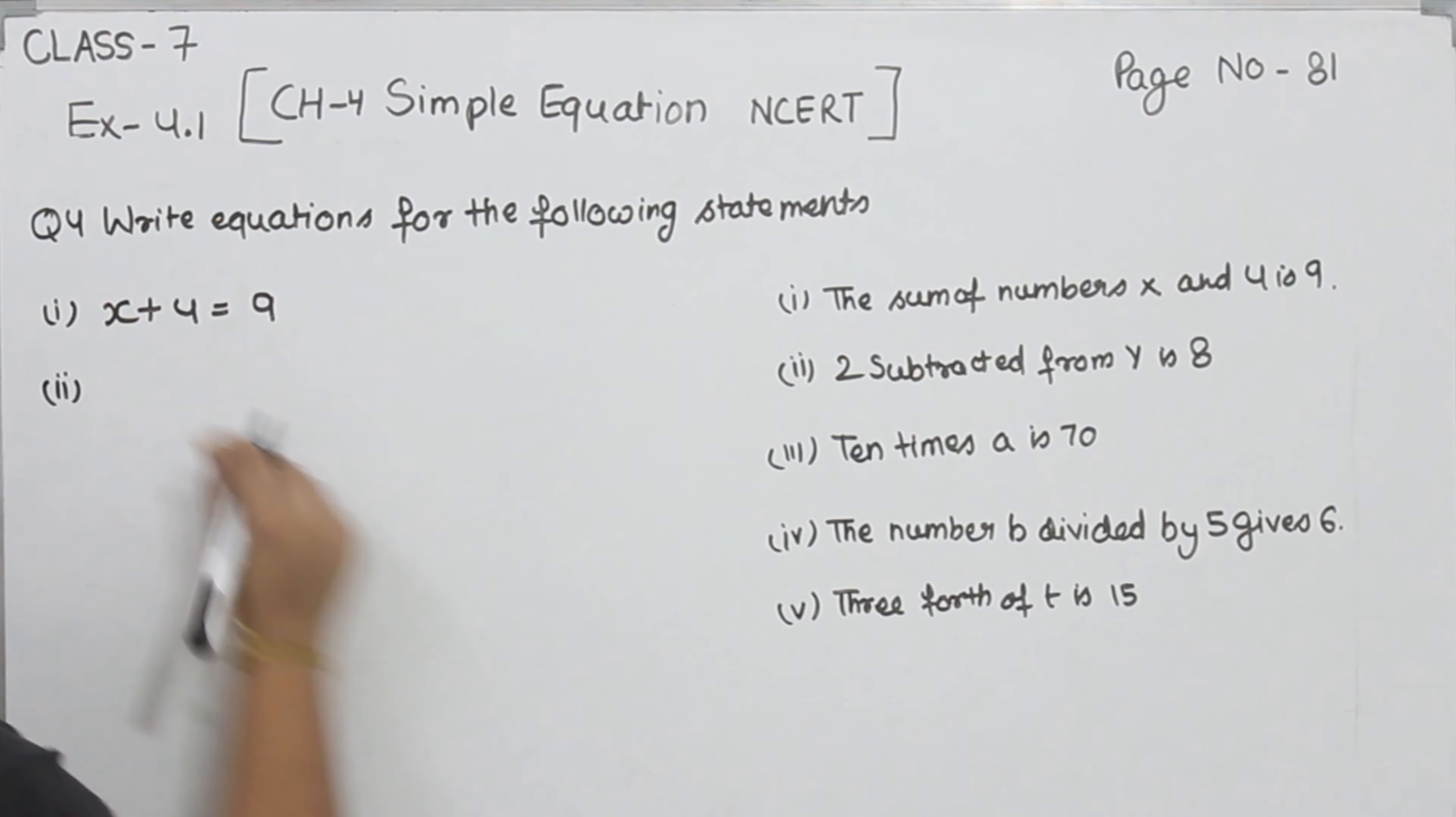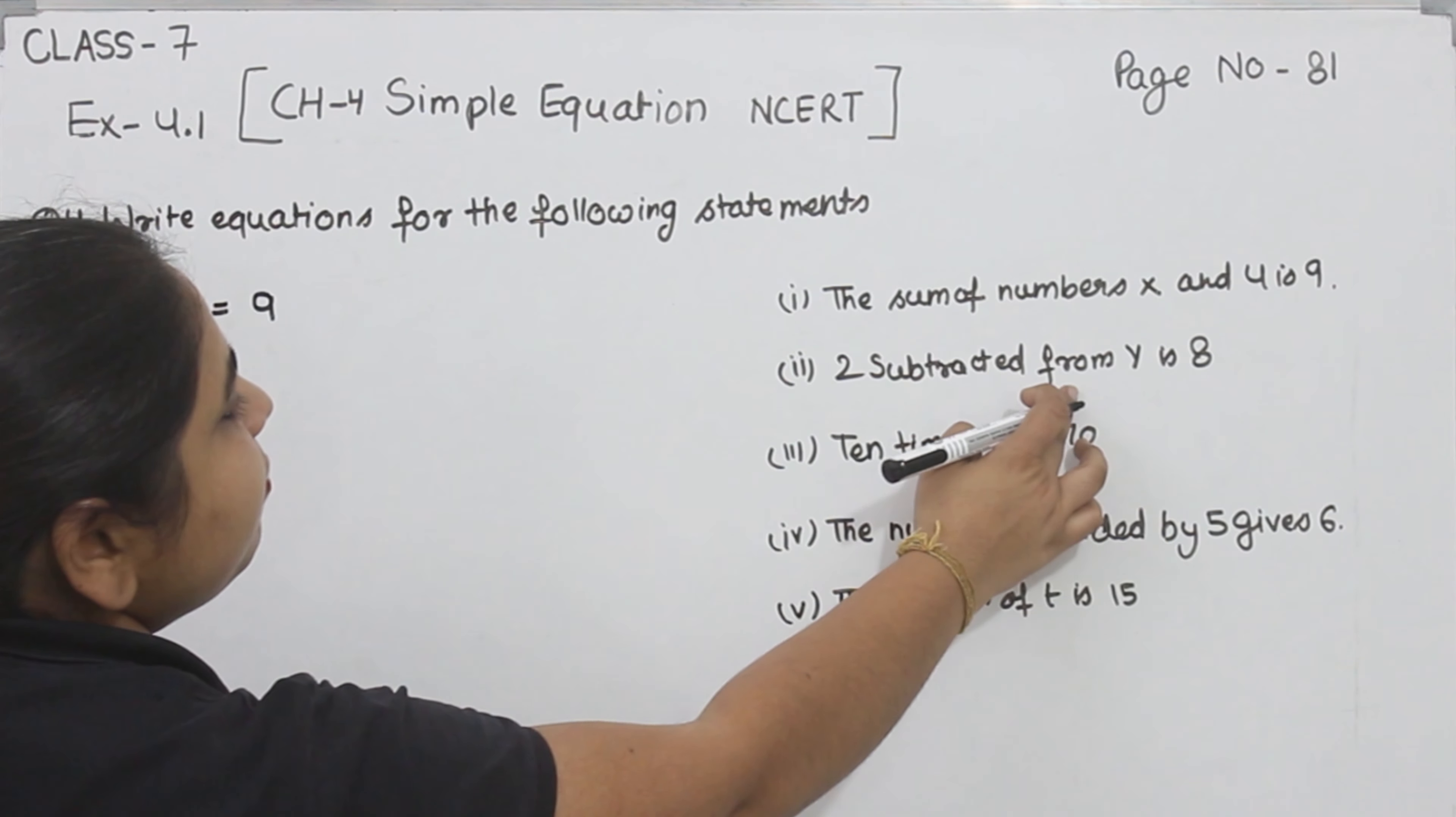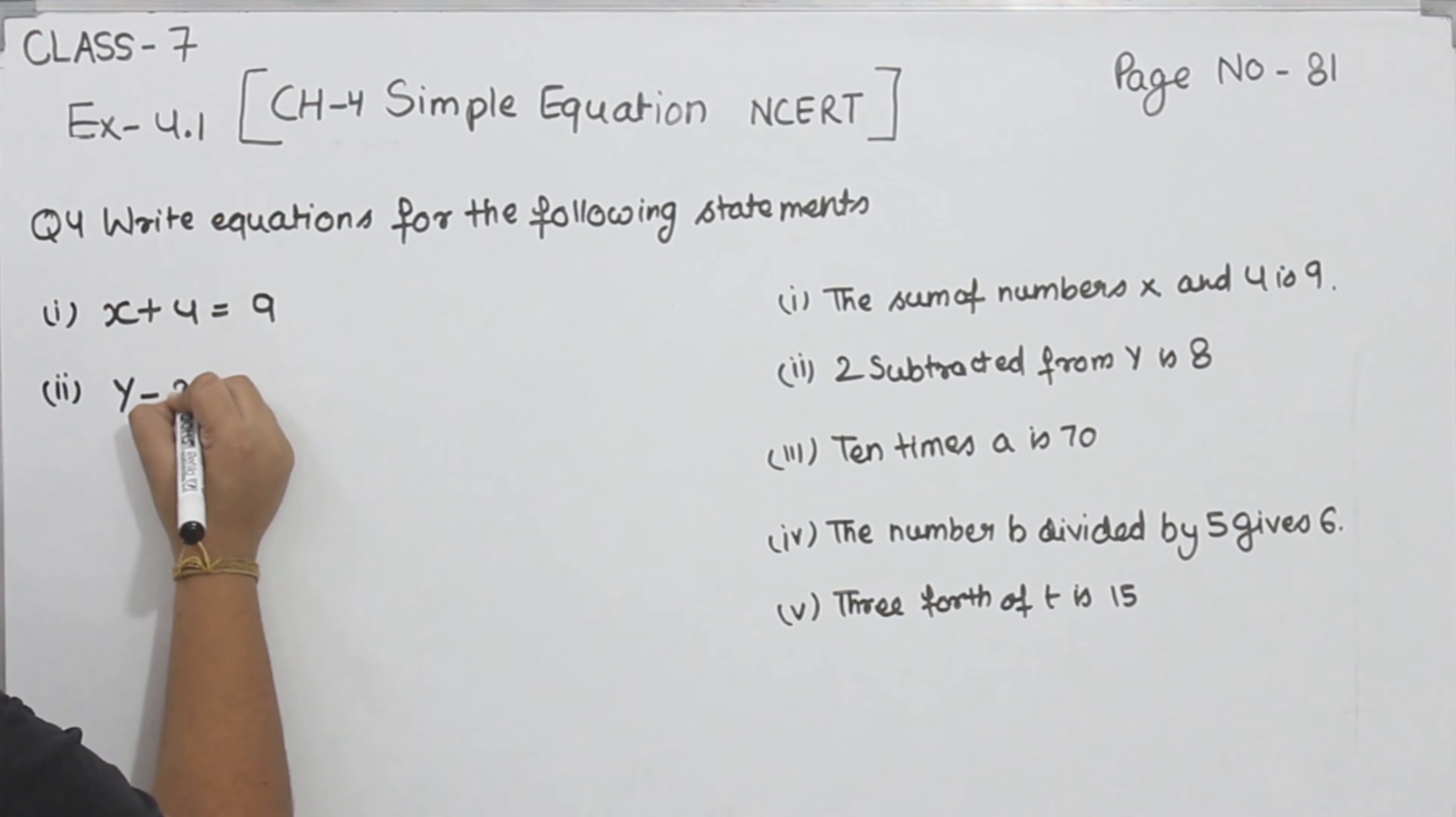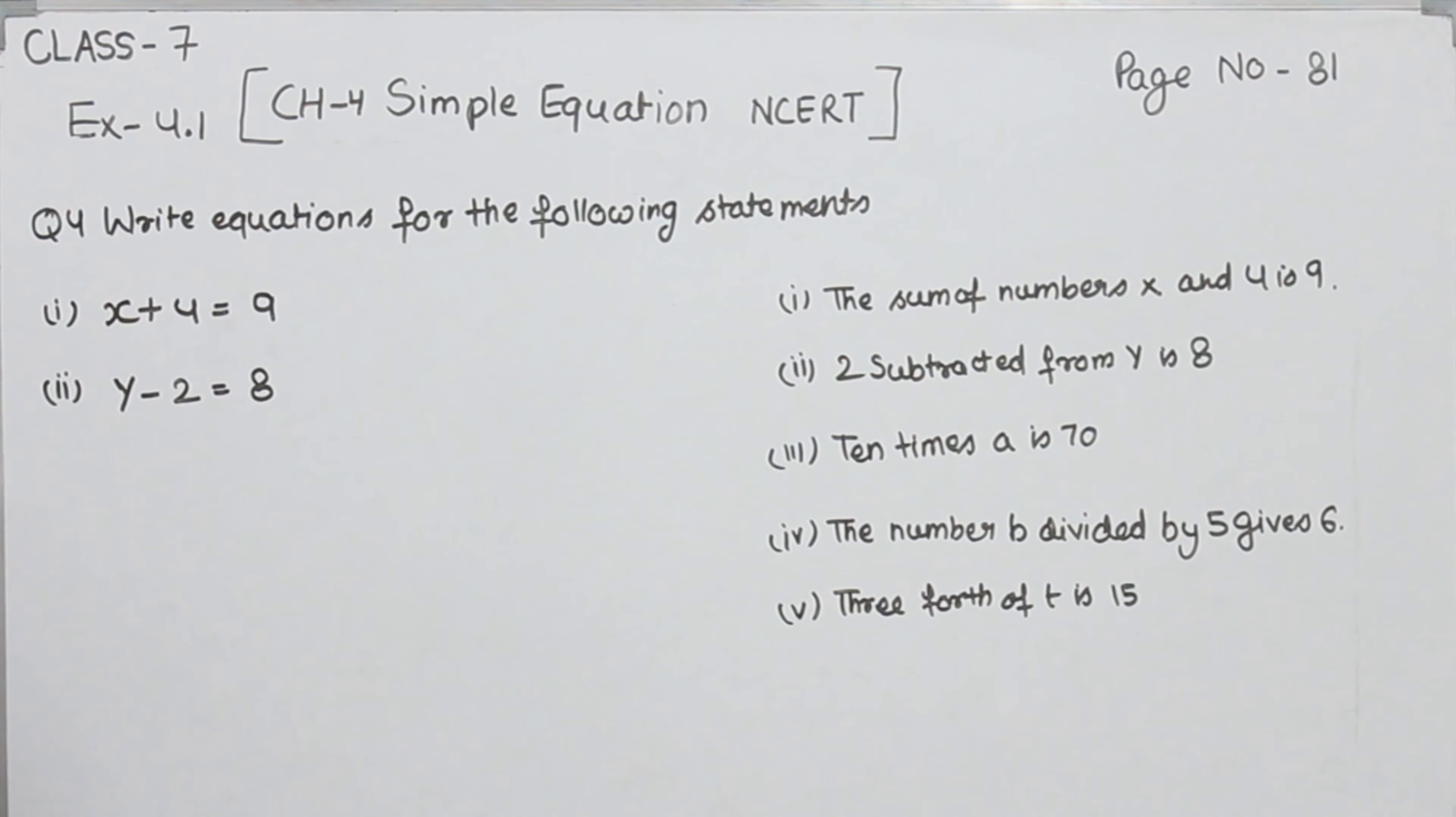Now the second one: 2 subtracted from y. So we have to subtract 2 from y. So y minus 2 is equal to 8. This is part 2.